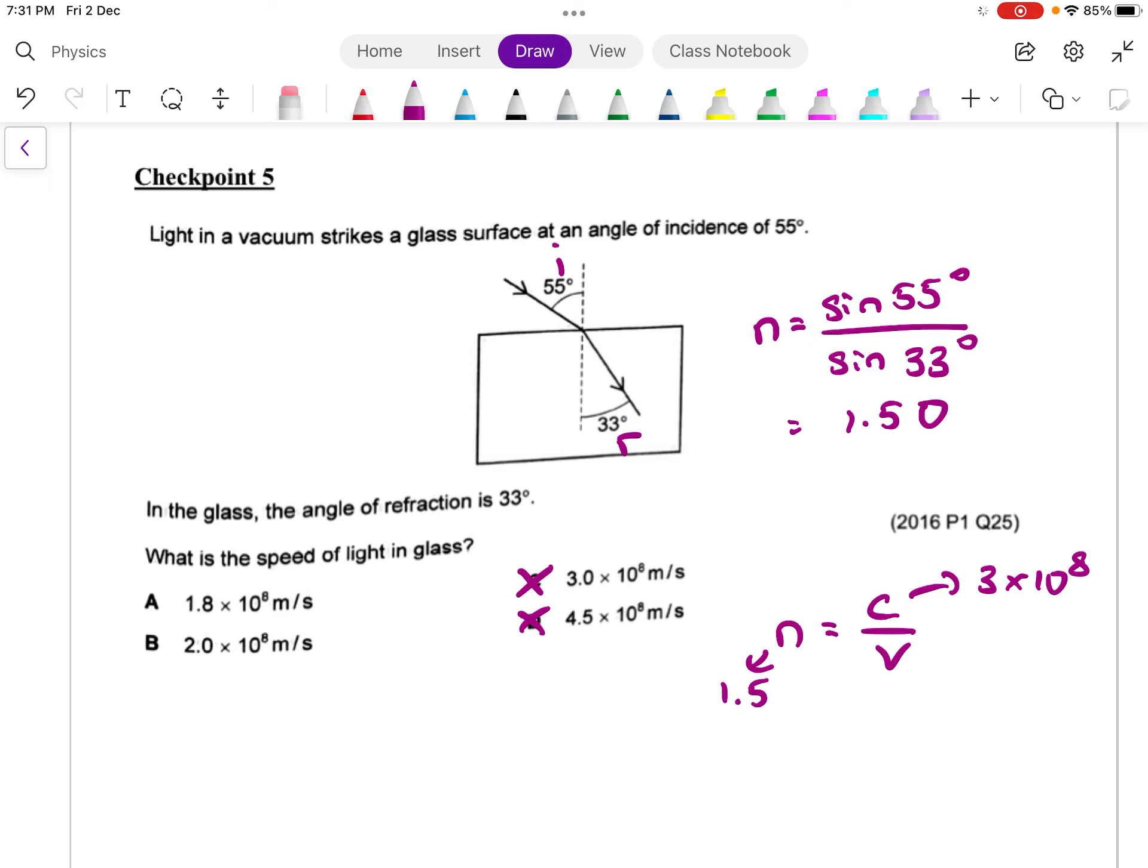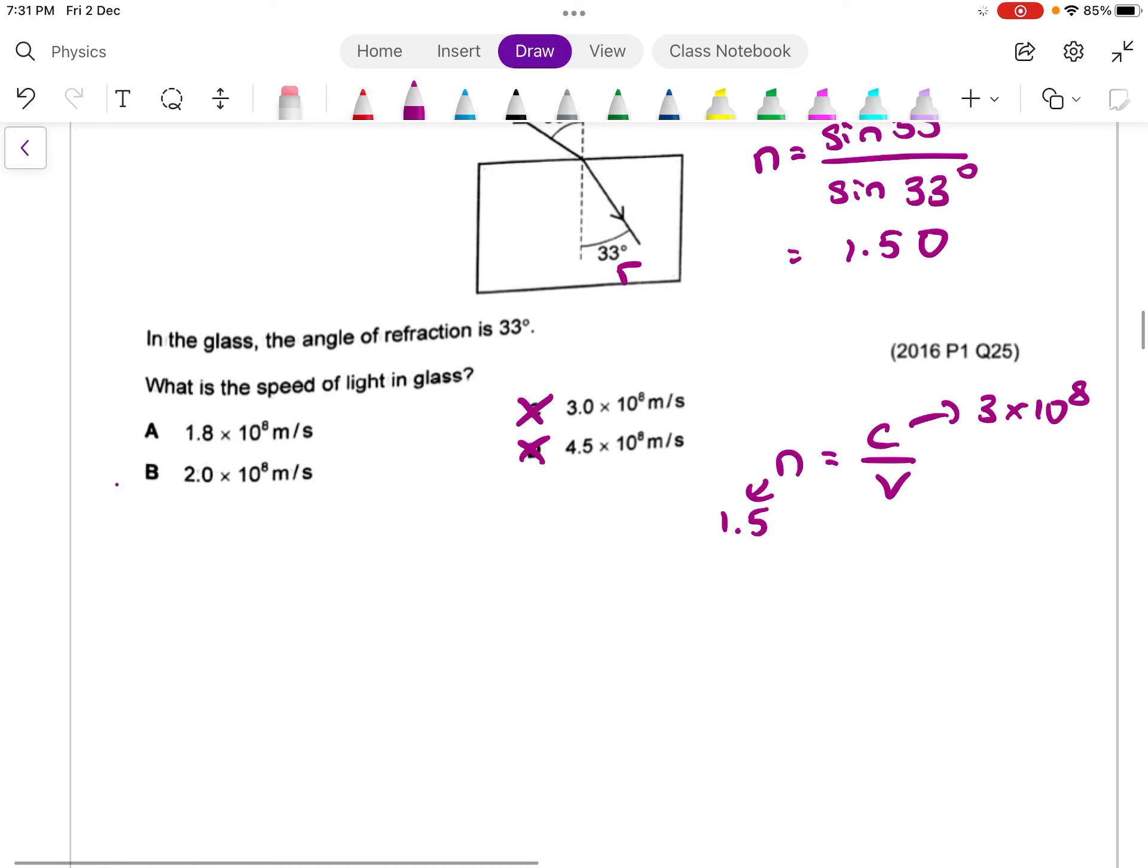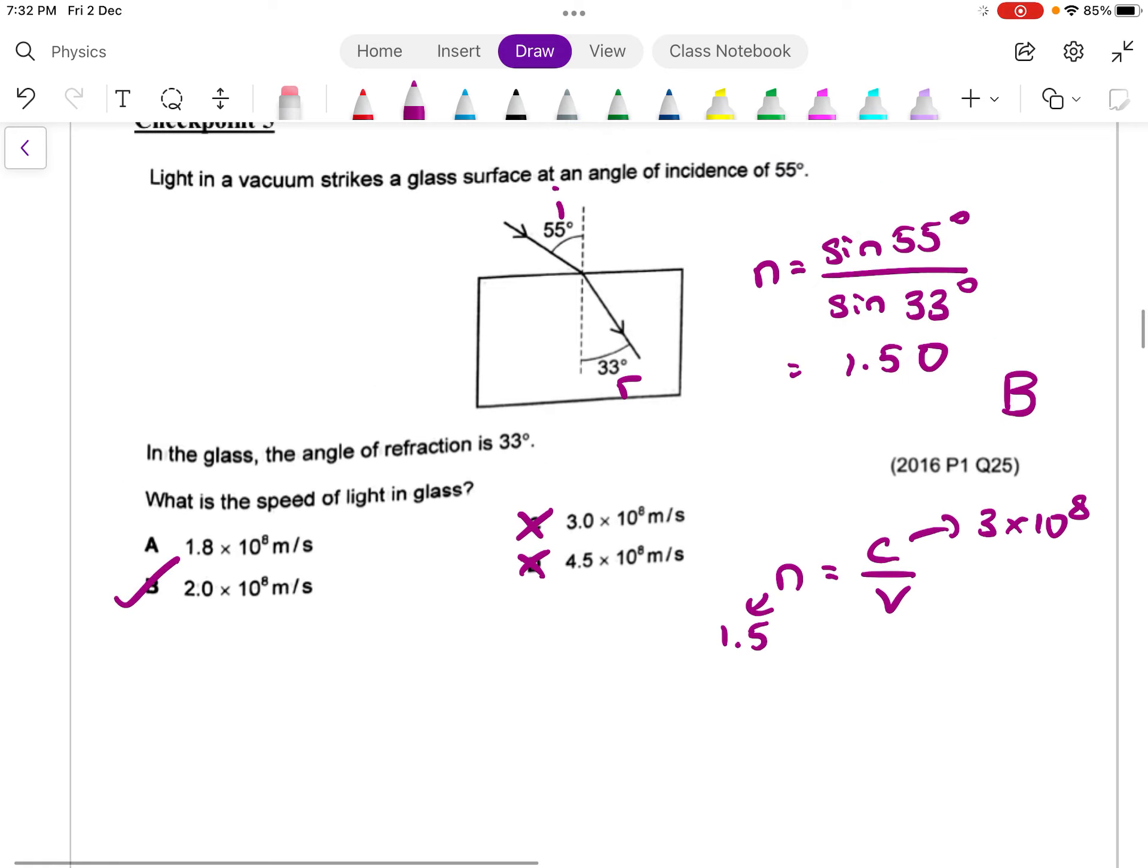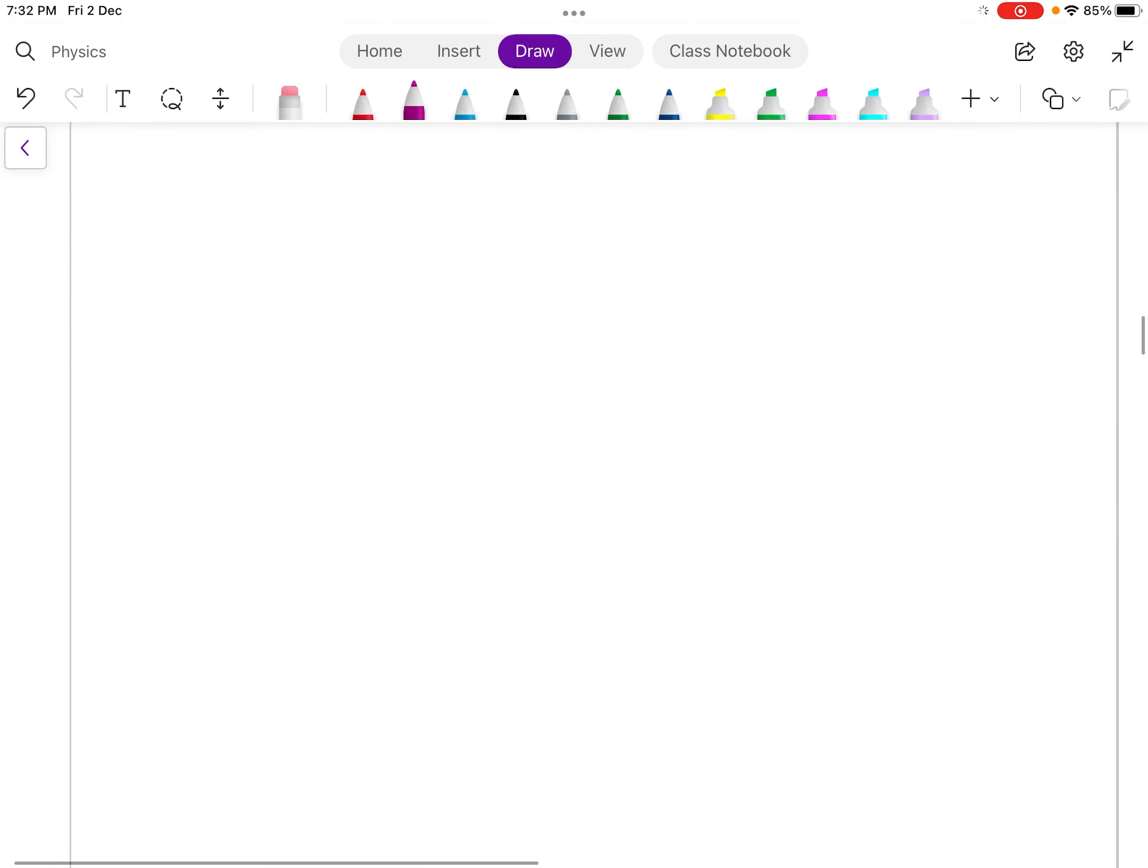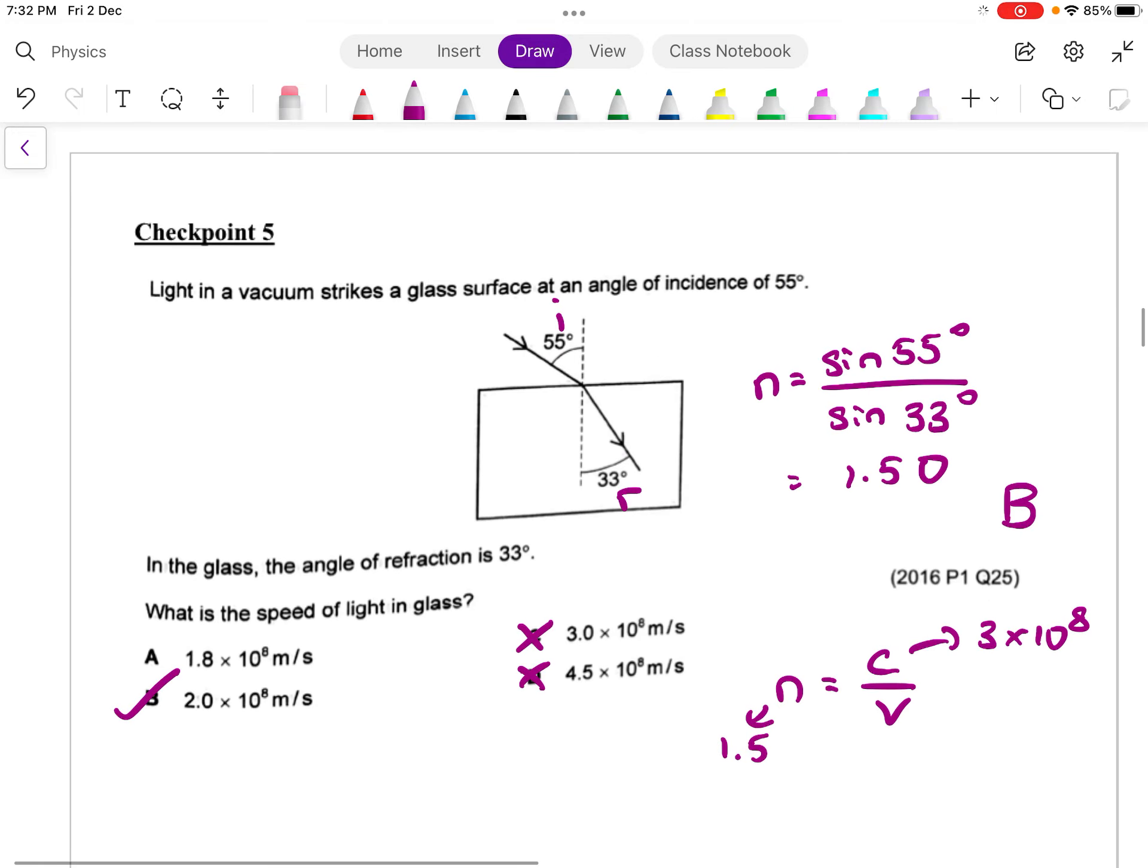Refractive index, 1.5. So roughly, of course, you do a bit of mental calculation. You should get B, B for Brazil. Okay, let's move on. Yeah, so this is all the different checkpoints.